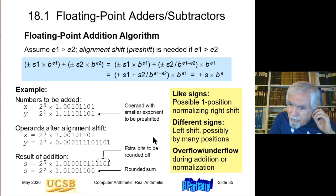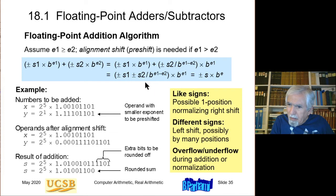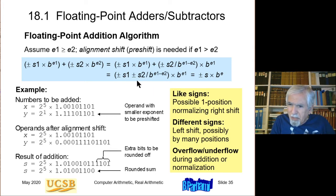If the two numbers have like signs, each significand is in the range 1 to 2. In the worst case the sum will be in the range 1 to 4 — if both are almost 2 and there is no shift, the sum can be almost 4. Therefore I may need a one-position normalizing right-shift.